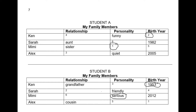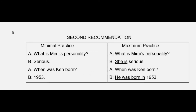Here is my second recommendation. Student A got very little speaking practice — they just read the word from the chart. We can call this minimal practice. To get maximum practice, we can tell students to answer with complete sentences. For example: 'What is Mimi's personality?' — 'She is serious.' 'When was Ken born?' — 'He was born in 1953.'